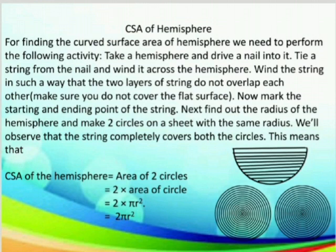Now we'll perform another activity to find the curved surface area of a hemisphere. For this, we'll take a hemisphere and drive a nail into it. We'll tie a string from the nail and wind it across the hemisphere, making sure the two layers of string do not overlap each other. We also need to make sure that we do not cover the flat surface, because in this case we are finding only the curved surface area. We'll mark the starting and the ending point of the string. After that, we'll find the radius of the hemisphere and make two circles on a sheet with the same radius. We observe that the string completely covers both the circles, which means the curved surface area of the hemisphere is equal to the area of two circles. We know that the area of a circle is π r². So, the curved surface area of the hemisphere is 2 × π r², that is 2π r².